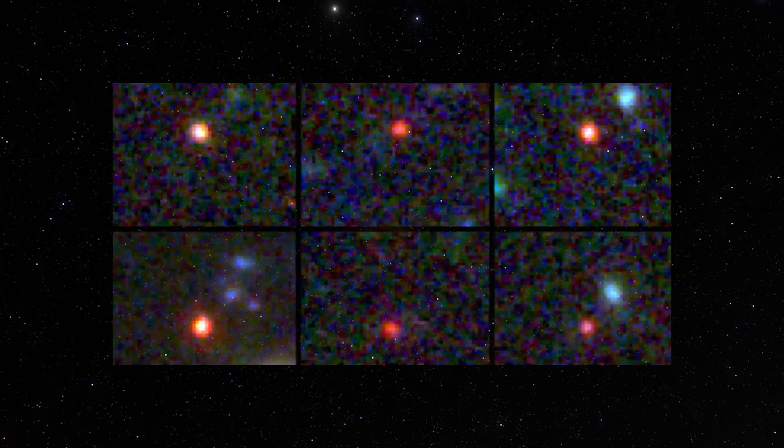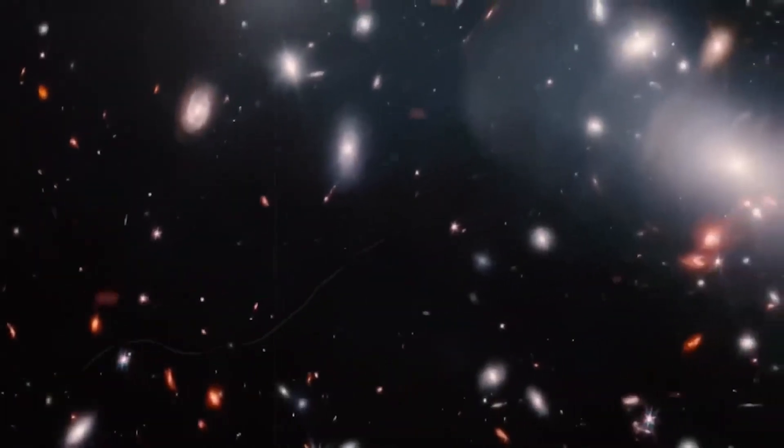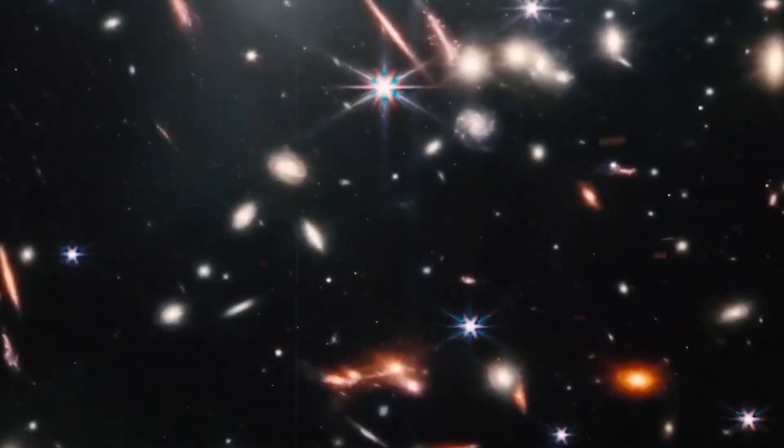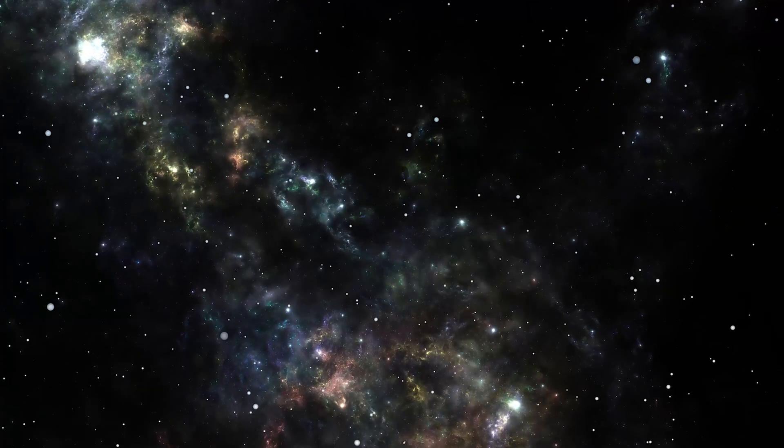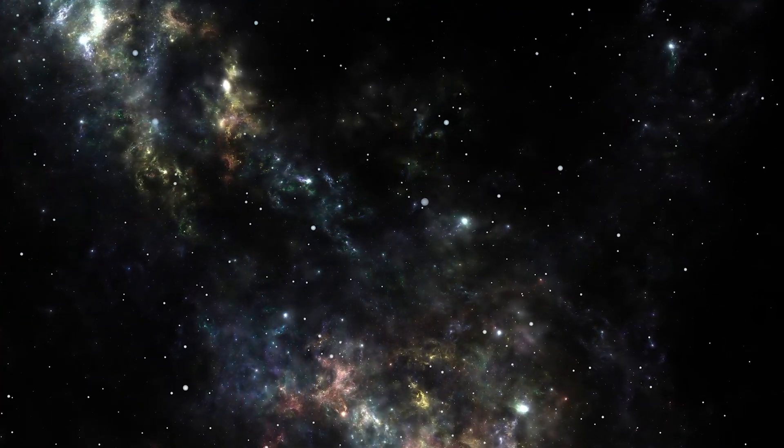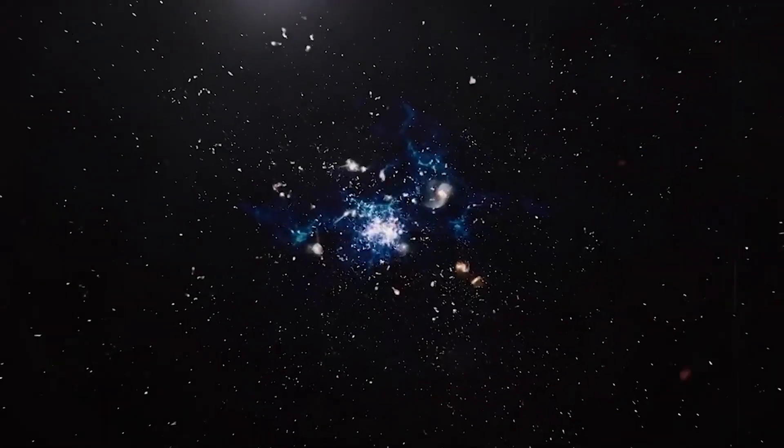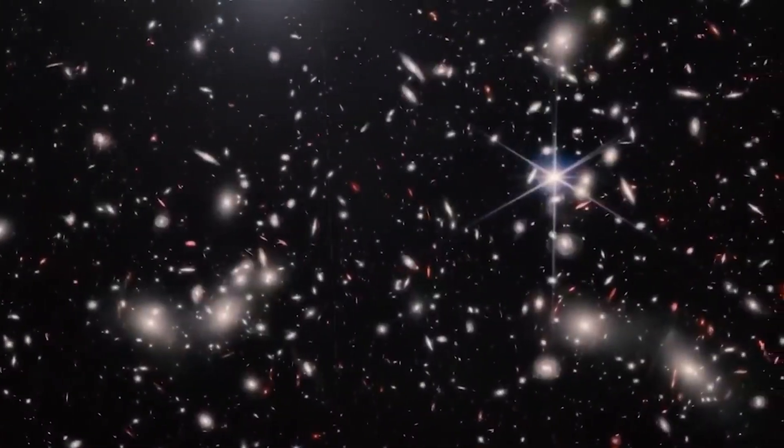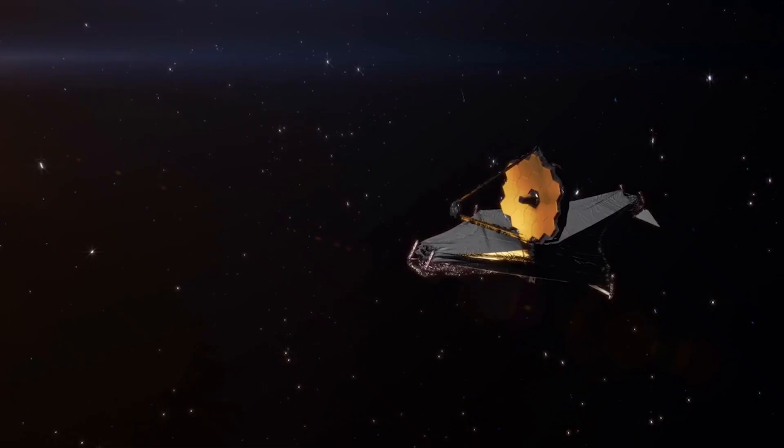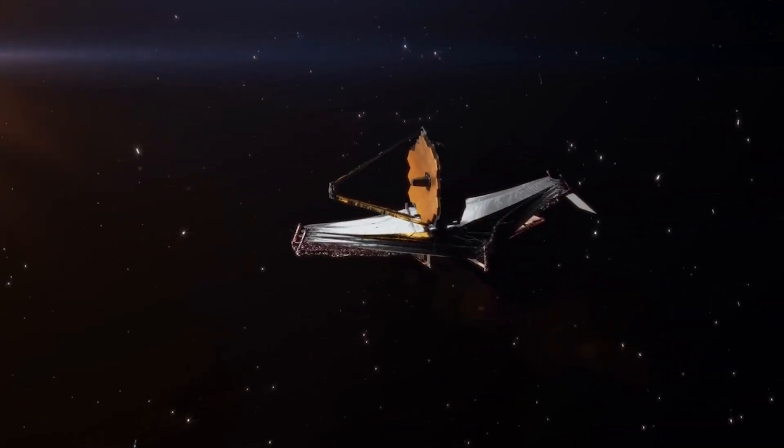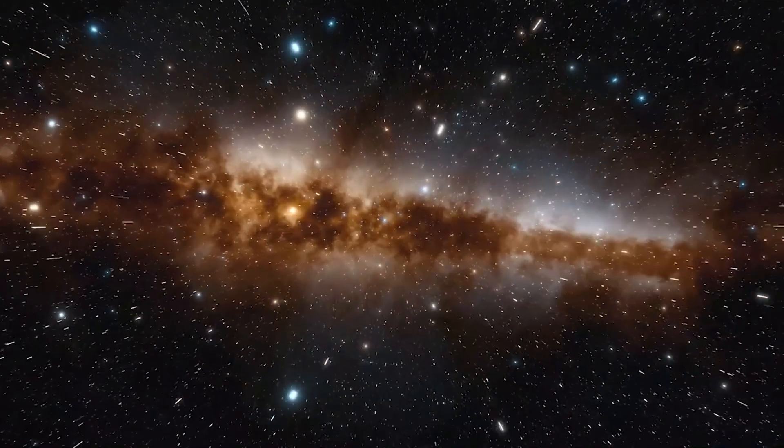Some researchers call them impossible galaxies, others call them ghosts from before time. But everyone agrees on one thing. These discoveries are rewriting the timeline of creation itself. To grasp the scale of the problem, think of the universe as a 24-hour clock. If the Big Bang happened at midnight, then the first stars should begin forming around 1am. Galaxies should start to cluster by 3am. But Webb is spotting giant spiral-like systems just a few minutes after midnight, structures that shouldn't even have the ingredients to exist yet.